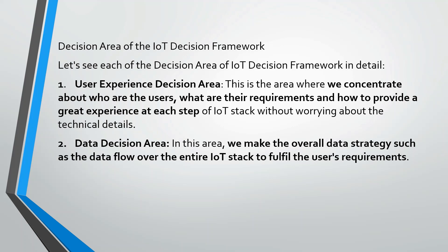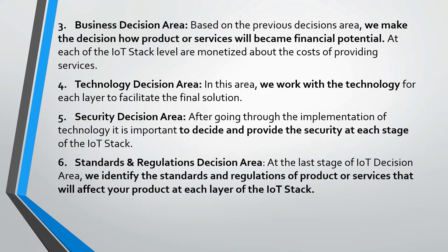The decision areas of the IoT Decision Framework are as follows. The user experience decision area focuses on who the users are, what their requirements are, and how to provide a great experience at each step. The data decision area involves making an overall data strategy, such as data flow over the network in the entire IoT stack, to fulfill user requirements. The business decision area involves deciding how products and services will become financially viable. The technology and security decision area focuses on providing security at each stage of the IoT technology stack, as without this the IoT product will not be efficient. The standards and regulations decision area identifies the standards and regulations that will affect your product at each layer of the IoT stack.